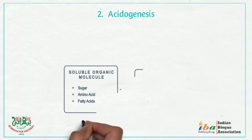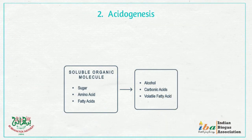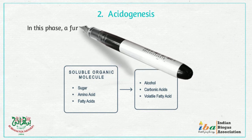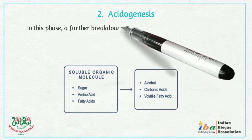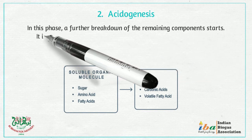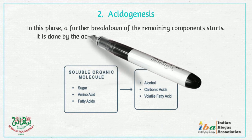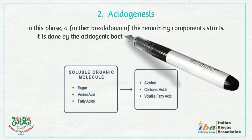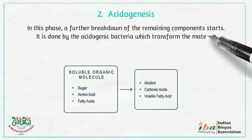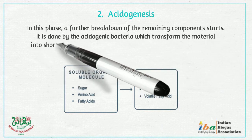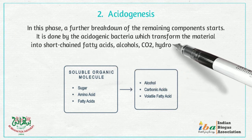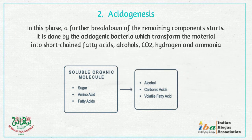2. Acidogenesis. In this phase, a further breakdown of the remaining components starts. It is done by the acidogenic bacteria which transform the material into short-chained fatty acids, alcohols, CO2, hydrogen and ammonia.